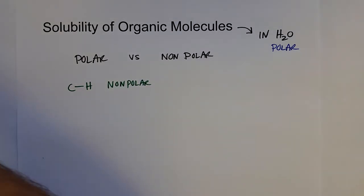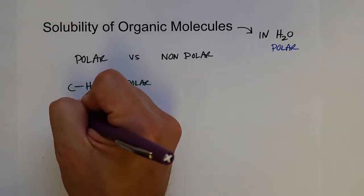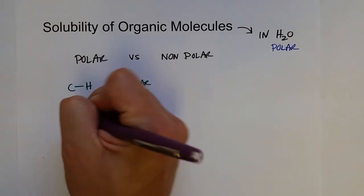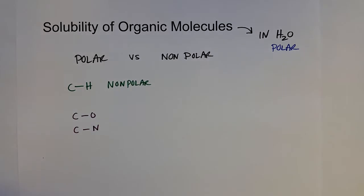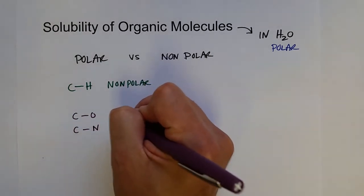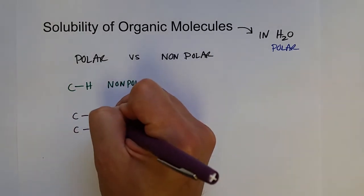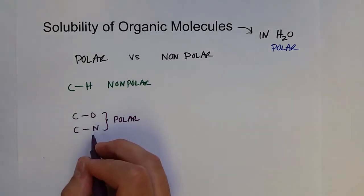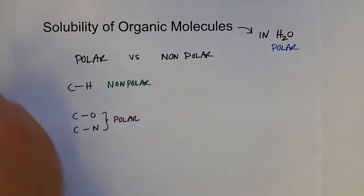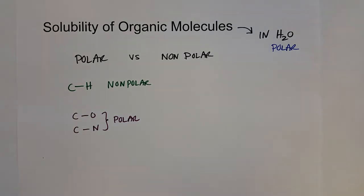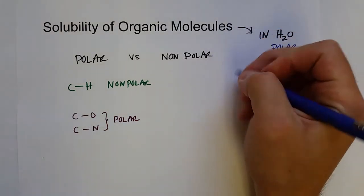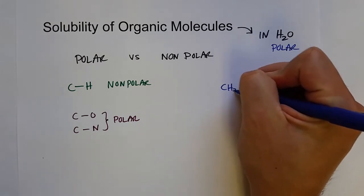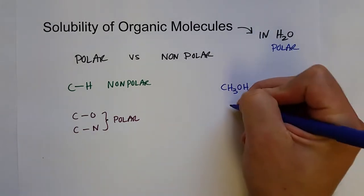What leads to polarity of organic molecules? We know that carbon-oxygen bonds and carbon-nitrogen bonds are polar. So the more carbon-oxygen bonds and carbon-nitrogen bonds a molecule has, the more polar it is. For example, let's think about methanol and ethanol.